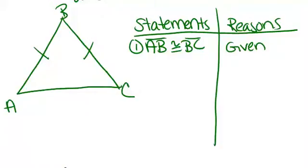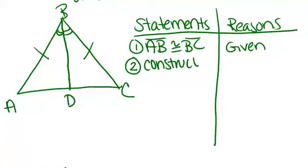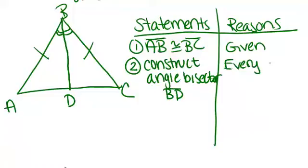Next, we're going to construct an angle bisector for angle B. So an angle bisector cuts an angle in half. So that means now those two angles are congruent. And let's label this new point D. So the second thing we did was construct angle bisector BD. And the reason you can do that is every angle has an angle bisector.